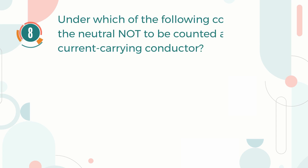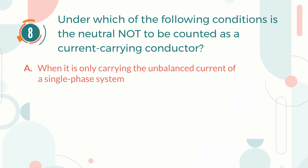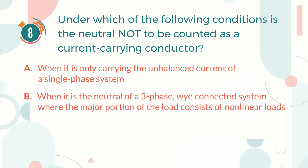Number 8. Under which of the following conditions is the neutral not to be counted as a current-carrying conductor? A. When it is only carrying the unbalanced current of a single-phase system. B. When it is the neutral of a three-phase, Y-connected system where the major portion of the load consists of non-linear loads.